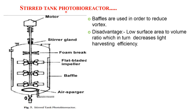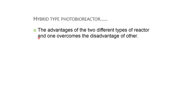Next is the stirred tank photobioreactor. In this photobioreactor, baffles are used to reduce vortexing. The disadvantage of the stirred tank photobioreactor is a low surface area to volume ratio, which in turn decreases the light harvesting efficiency of the algal biomass. The hybrid type photobioreactor combines the advantages of two different types of reactors, where one overcomes the disadvantage of the other.